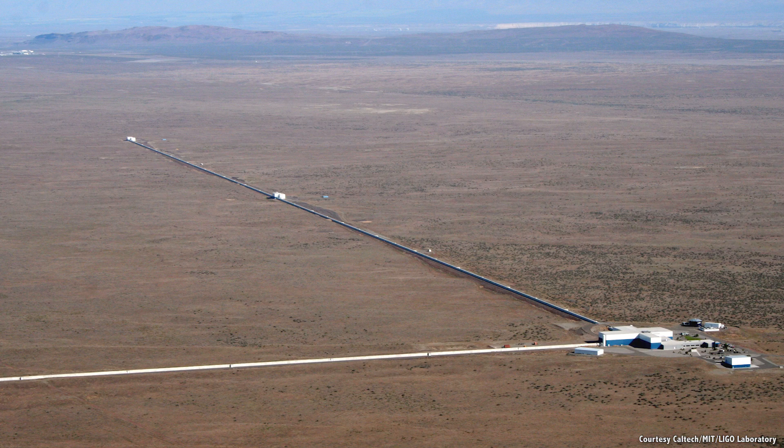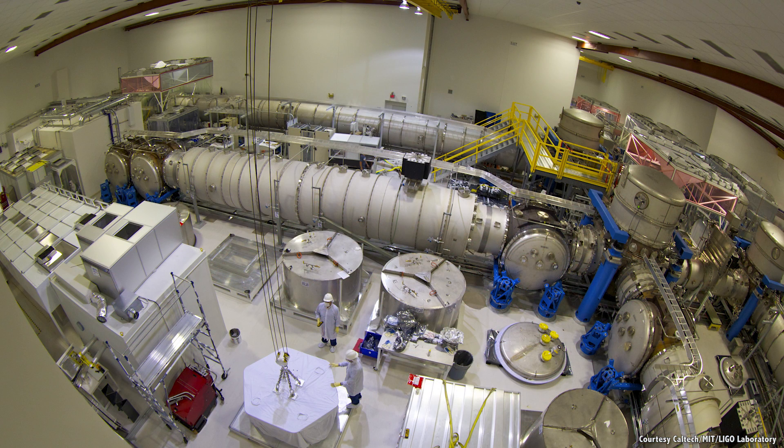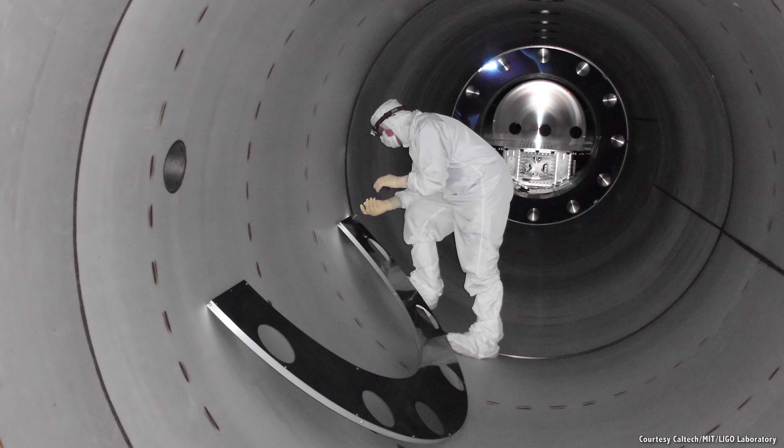The LIGO project was begun back in 1994, and the first iteration operated from 2002 to 2012 without a single gravitational wave detection. It was clear that the facility wasn't sensitive enough, so researchers went back and made massive improvements.